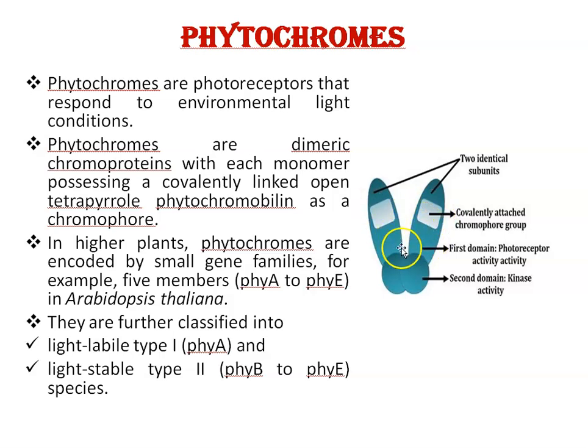This is the chromophore group. In higher plants, phytochromes are encoded by small gene families. For example, five members in Arabidopsis thaliana — phytochrome A to phytochrome E. They are further classified into two types: light labile type 1, phytochrome A, and light stable type 2, phytochrome B to phytochrome E.